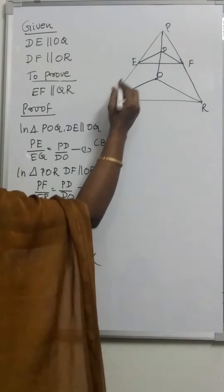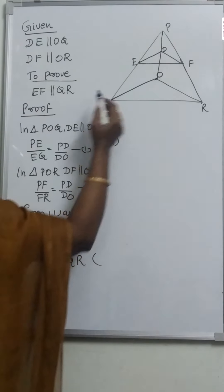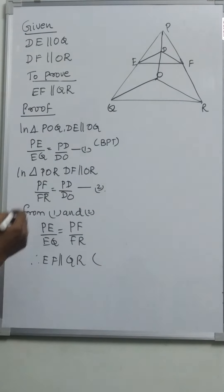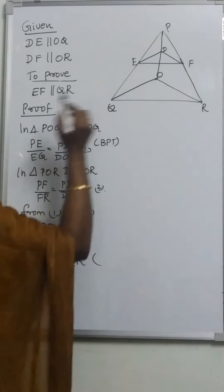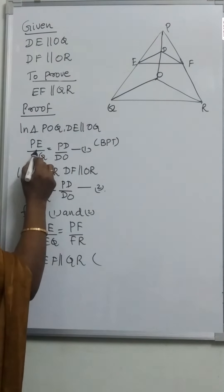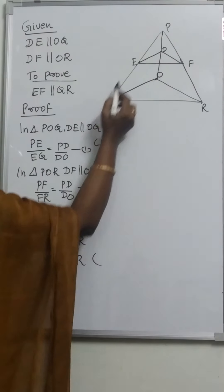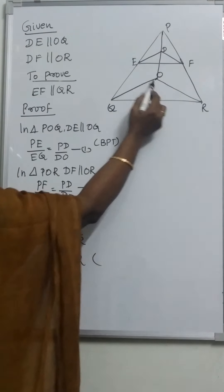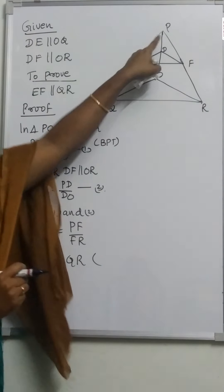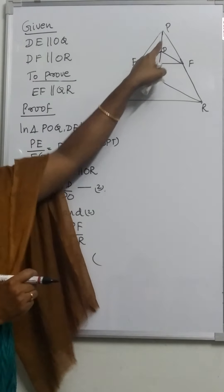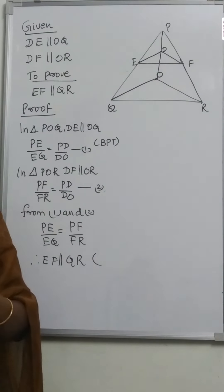In triangle POQ, DE is parallel to OQ. Therefore, PE by EQ is equal to PD by DO by the Basic Proportionality Theorem. That is equation 1. Now, in triangle POR, DF is parallel to OR. Therefore, PF by FR is equal to PD by DO. That is equation 2.